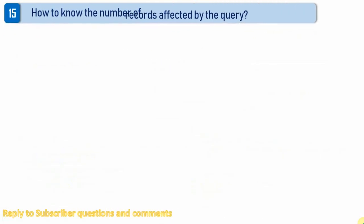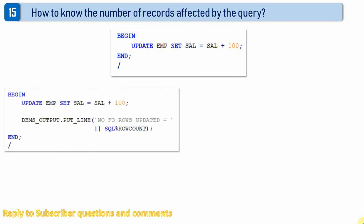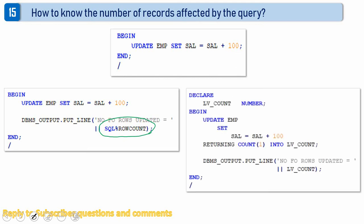Let me first show you the two different methods, then I will show you the demo. There are two different ways to find the number of records affected. The first method is using the implicit cursor attribute SQL%ROWCOUNT. Any SQL statement we execute is handled by Oracle's optimizer, which opens a cursor, executes the query, returns the information, and closes the memory location. SQL is the name of the implicit cursor, and ROWCOUNT returns the number of rows affected by it.